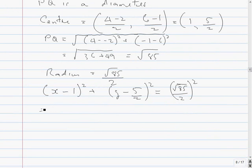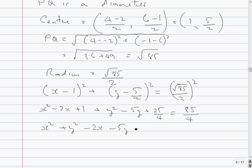So this will be x squared minus 2x plus 1 plus y squared minus, now that times that would give 5 over 2y, so double that will give 5y, plus 5 squared is 25 over 4, is equal to root 85 squared is 85, 2 squared is 4. Okay, so we've got x squared plus y squared minus 2x minus 5y plus 25 over 4, plus 25 over 4, minus 85 over 4 equals 0. This looks more promising than I thought.